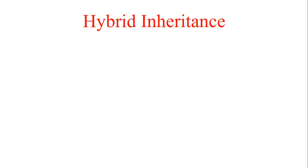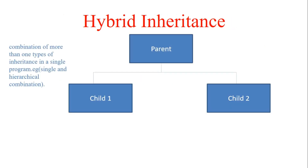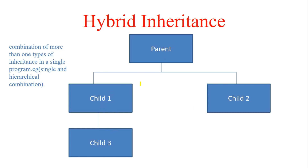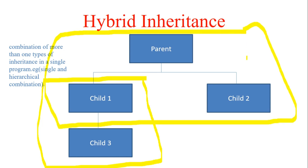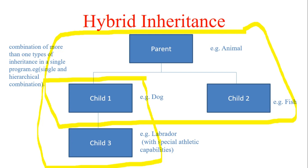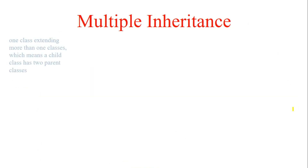Hybrid inheritance is a combination of two or more types of inheritance in Java. For example, Animal and Dog is single inheritance; Animal with Dog, Fish, and Frog is hierarchical inheritance. Hybrid is the combination of both — for example, Animal, Dog, Labrador, and Fish together form a hybrid mix.